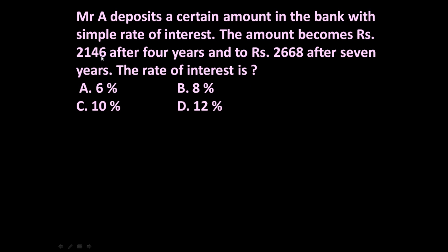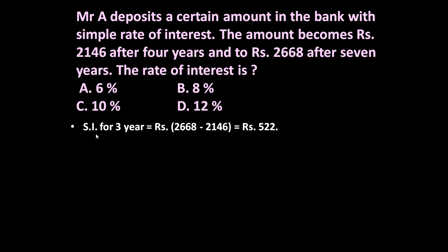So the amount is increasing at a certain rate of interest — it becomes Rs 2146 after 4 years and Rs 2668 after 7 years. In every year the interest is increasing while the principal amount remains the same. So now let us calculate the simple interest for 3 years.